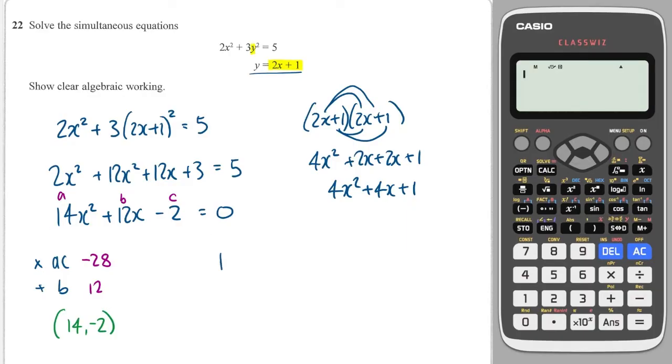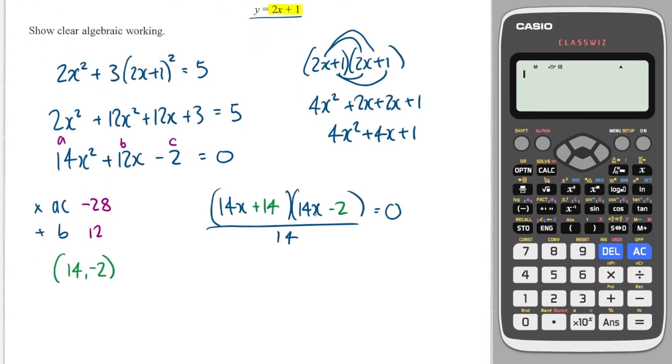Now, because the A term is 14, I write 14x, 14x, all divided by 14. And because these two numbers in green here are 14 and minus 2, I write 14 and I write minus 2. And now what I can do is I can divide through by 14, and I can divide the whole of this one by 14, which is going to give me x plus 1. And over here, it's going to give me 14x minus 2, that equals 0. And this is going to give me that x is equal to minus 1, and this is going to give me that 14x is going to equal 2. So x is equal to 2 over 14, which is 1 over 7.